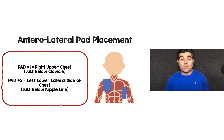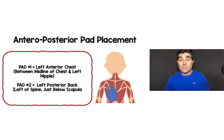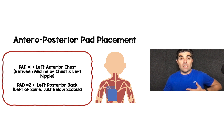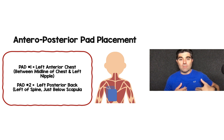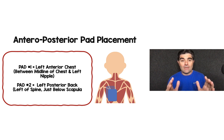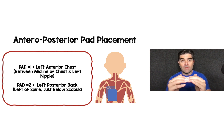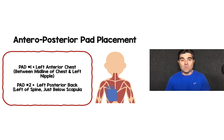When we go to anteroposterior pad placement for vector change, the first pad is placed anteriorly on the left side of the chest — on the left anterior chest, just between the midline of the chest and the left nipple, so roughly halfway between those two landmarks. The posterior pad gets placed on the left side of the back, just to the left of the spine, just below the level of the inferior border of the scapula, though being a little bit on the scapula is okay as well.